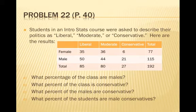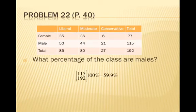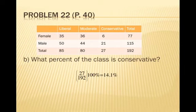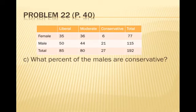What percentage of the class are males? We take the total number of males, 115, divided by the total number of people in the class, 192, times 100%, which is 59.9% — so about 60% of the class are male. What percent of the class is conservative? The denominator is the total class of 192. There are 27 conservative people, so 27 divided by 192 times 100% is 14.1%.